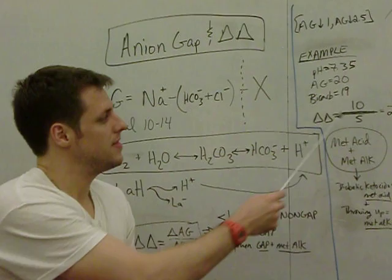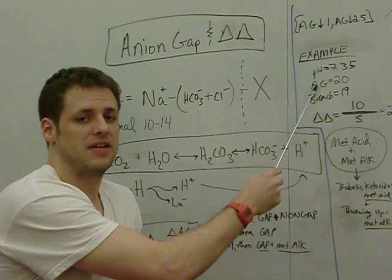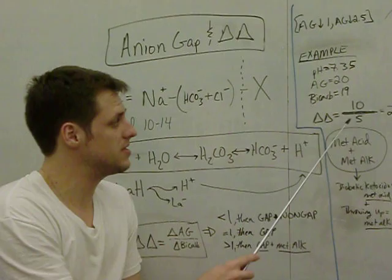And the way you answer that is you say, well, let me look at my delta delta. The change in my anion gap, so that's what you have, and how that's different from the normal, is 10. I said a normal anion gap is 10, you have 20, so the delta anion gap is 10.